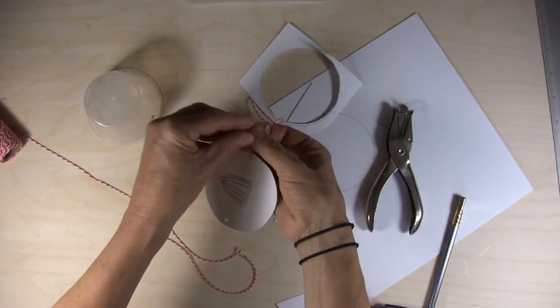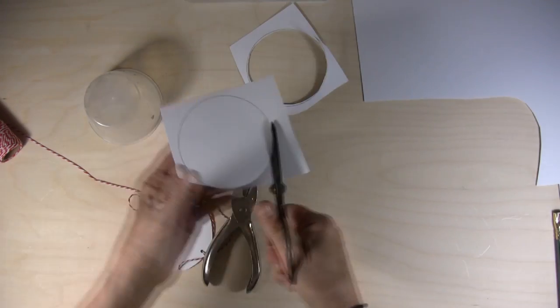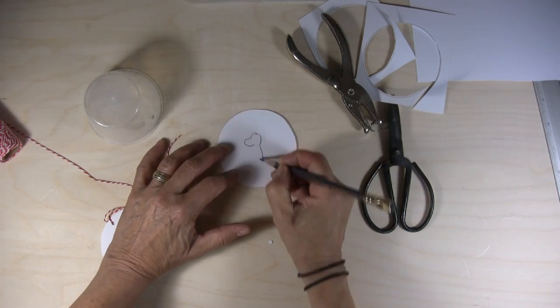So you draw on the center on one side, you flip it over, draw on the other, punch some holes, tie the string.